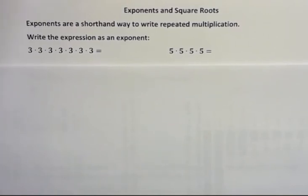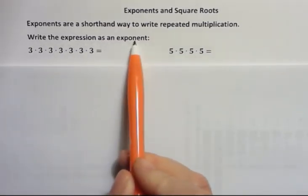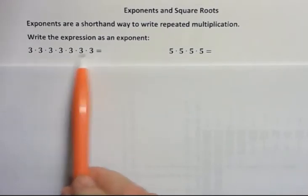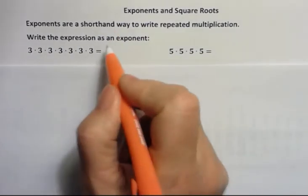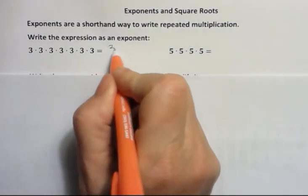Hello, I'm Carly McEvoy. I'm talking about exponents and square roots in this video. Exponents are just a shorthand way to write repeated multiplication. So you might be asked to write an expression as an exponent given repeated multiplication. This number that you see repeated — that's what we call the base. So 3 in this problem is our base.